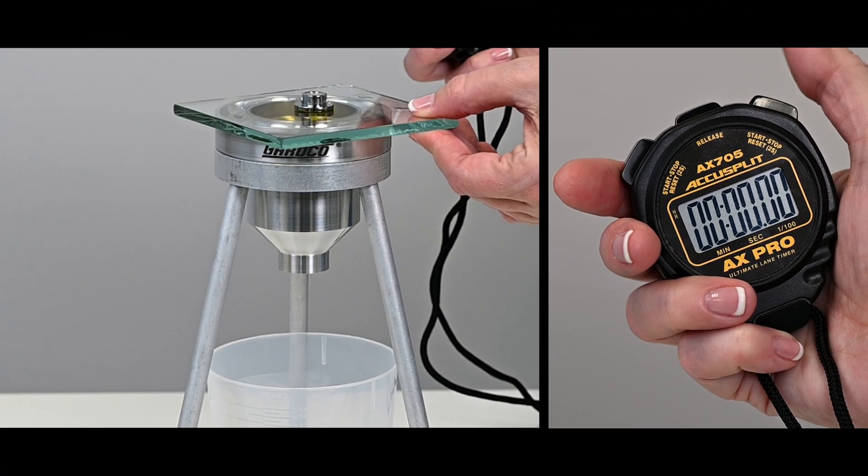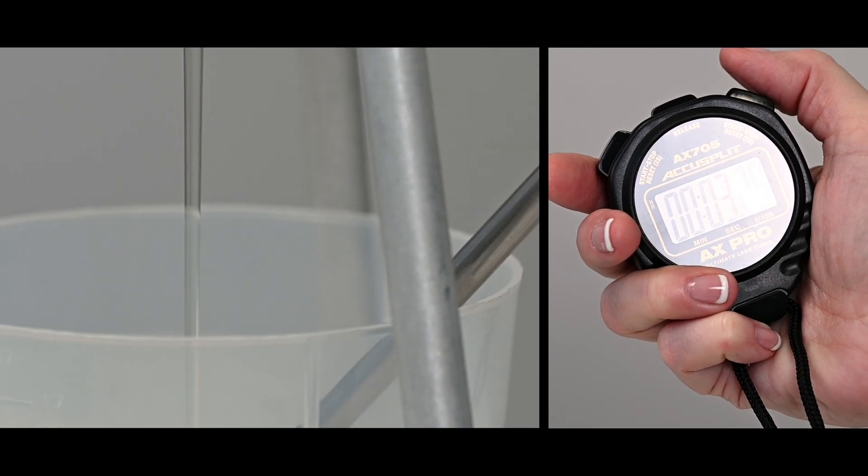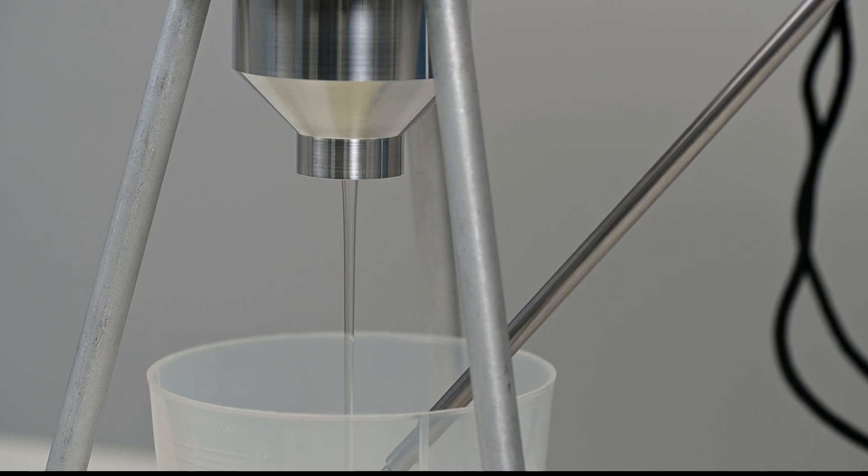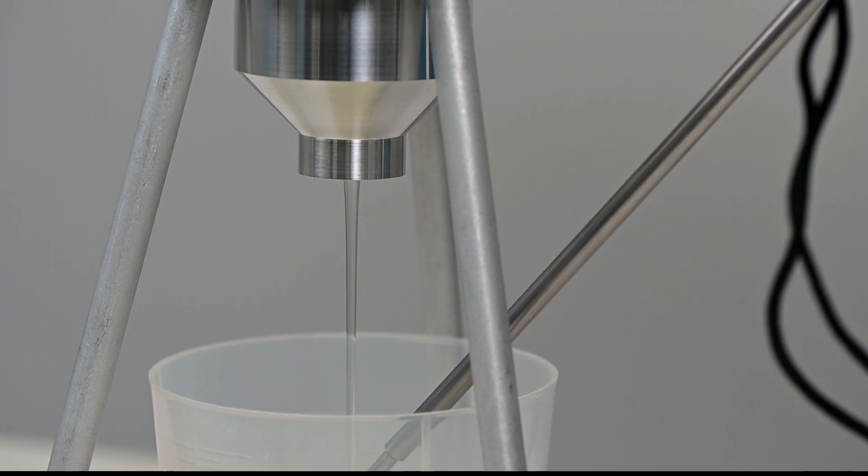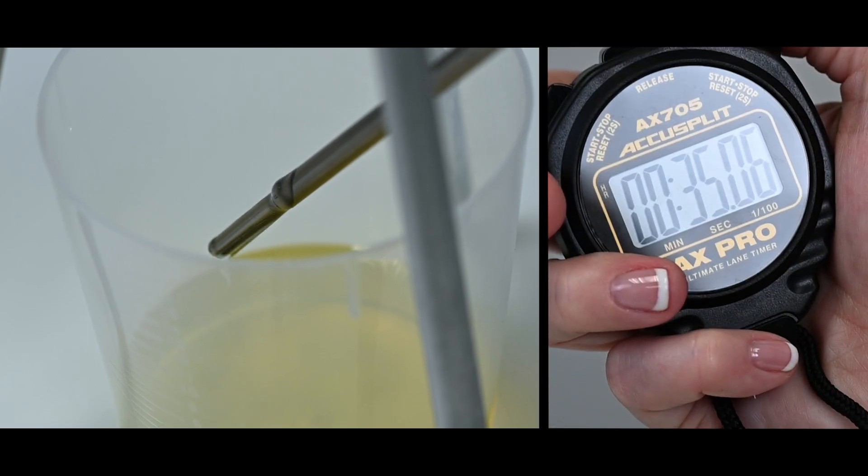Start the stopwatch at the precise time the cover plate is removed and observe the efflux flow and temperature. Allow the efflux stream to fall on the thermometer and observe the temperature. When the first definite break in the material is observed, stop the stopwatch.